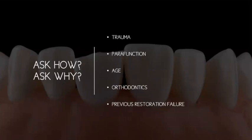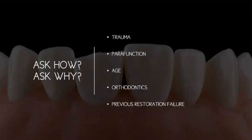Consider parafunction — are they grinding or bruxing? We need to diagnose this first, because otherwise we put composite in and three months later it's all broken off. It's very common for patients to say their front tooth keeps chipping and keeps getting repaired every three to four months, and they've left their previous dentist because of it. That has nothing to do with the quality of the composite — there are slides, interferences, or other issues causing it to chip. We need to look deeper.